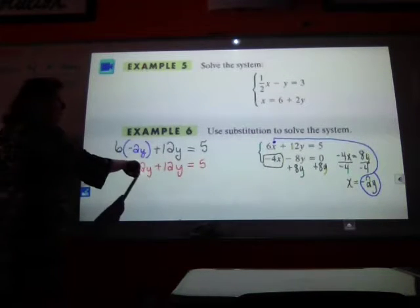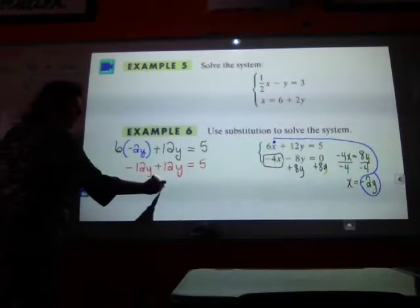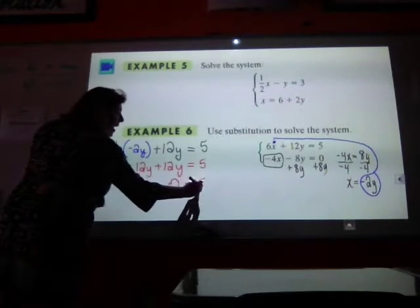What's going to happen with negative 12y and 12y? Cancel out when you have 0 is equal to 5.